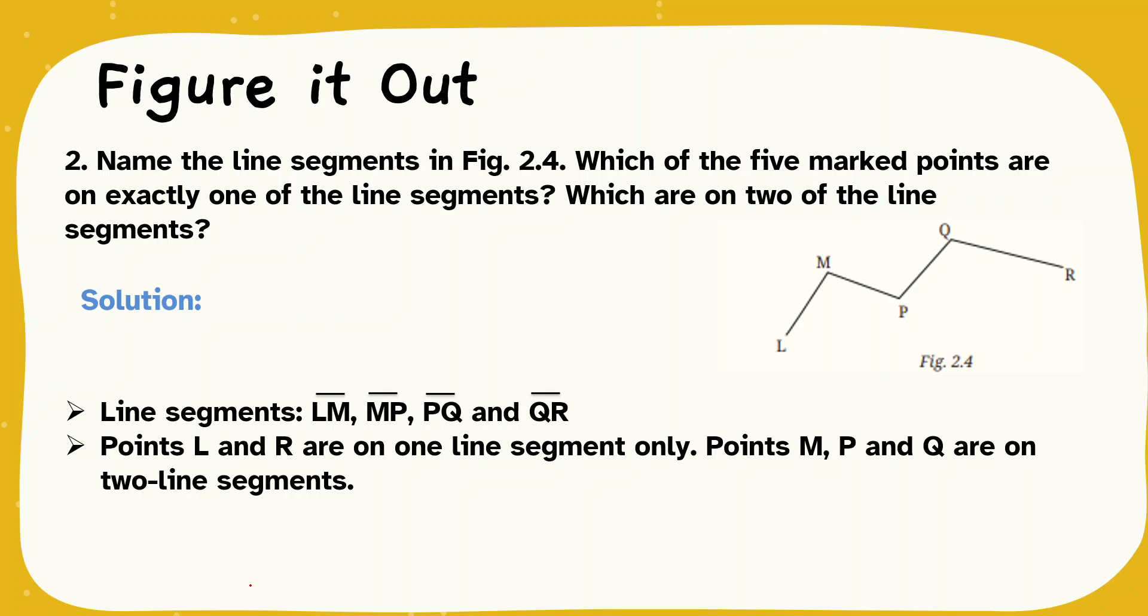Line segments are LM. If we see LM here, this is a line segment and MP is a line segment. PQ is a line segment and QR are the line segments. Now, points L and R are on line segments only.